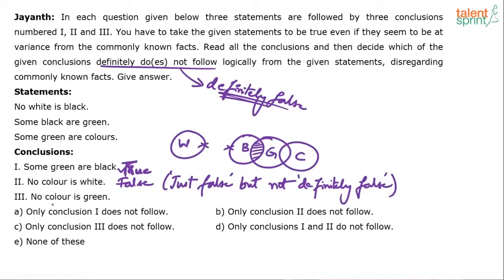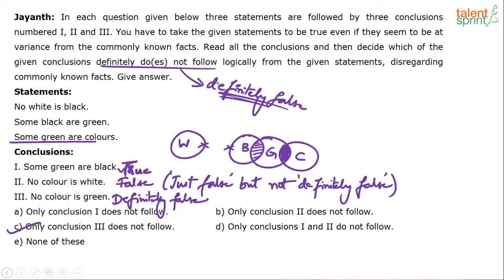Third conclusion: no color is green. This is definitely false, because it is clearly given that some green are colors — so when some green are colors, how can we say no color is green? This is definitely false.